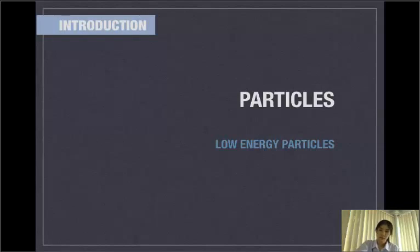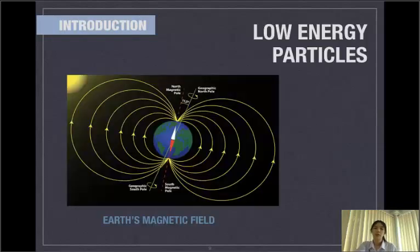First one is low energy particles. Low energy particles when they come to Earth will spiral around the Earth's magnetic field, which is the yellow line in this picture. But they can move in the same direction as the Earth's magnetic field or in the opposite direction.